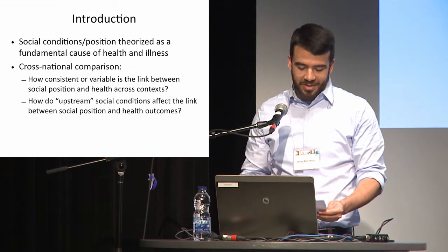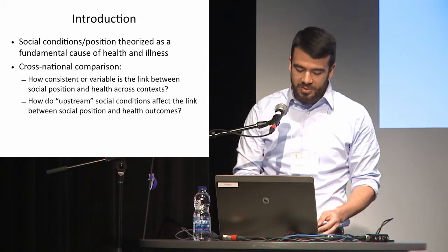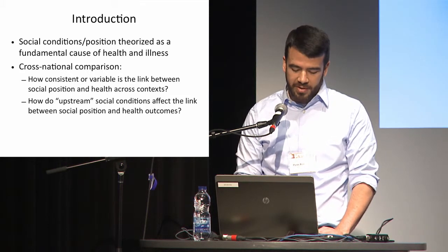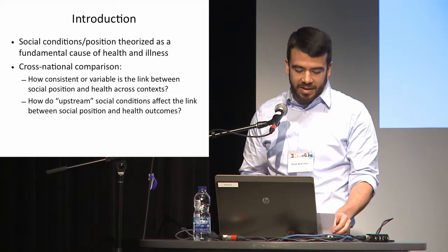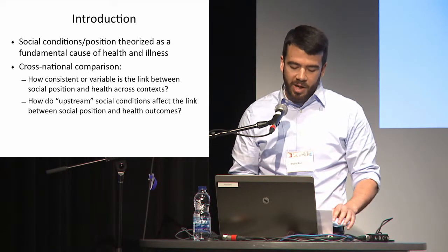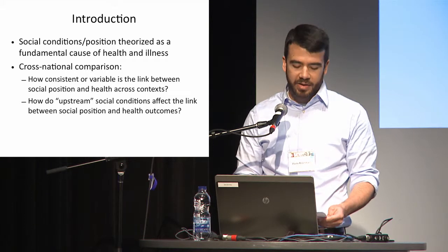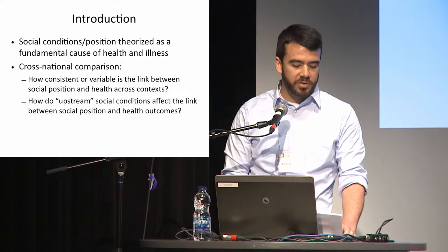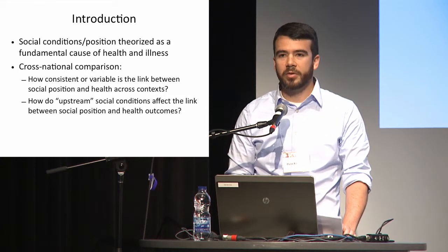This is something that's not only been verified and studied empirically, but also theoretically. Low social standing or social position has been conceptualized as a fundamental cause of health and illness, capable of reproducing health inequalities even as more immediate mechanisms for illness change across time and place. The predominant focus has been on the inverse association between socioeconomic status and health, but it also includes research on inequality related to gender, race, ethnicity, sexual orientation, and migration status.